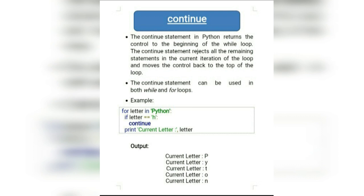The continue keyword takes the control back to the loop and performs the next iteration by skipping the statements of the current iteration from the occurrence of continue. That means when a particular condition becomes true, it will continue back to the for loop for iterating the next condition, not the current one. In this example, if the condition letter equals h becomes true, it will continue but will not print the current letter h — it will go back to the for loop for the next iteration.